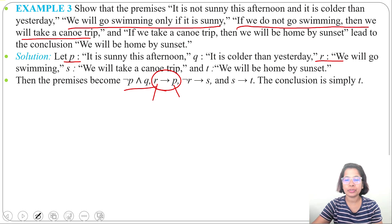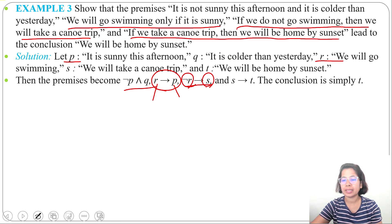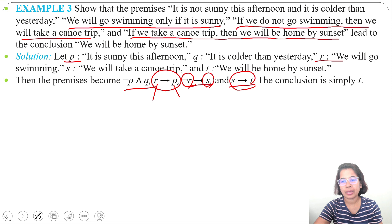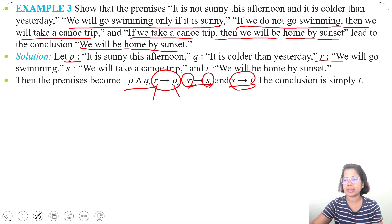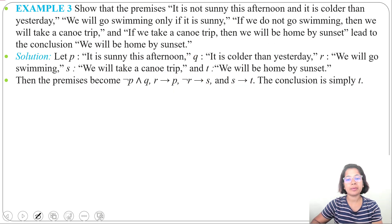The third premise, 'if we do not go swimming then we will take a canoe trip,' is negation R implies S. The fourth premise, 'if we take a canoe trip then we will be home by sunset,' is S implies T. The conclusion we need to derive is simply T.